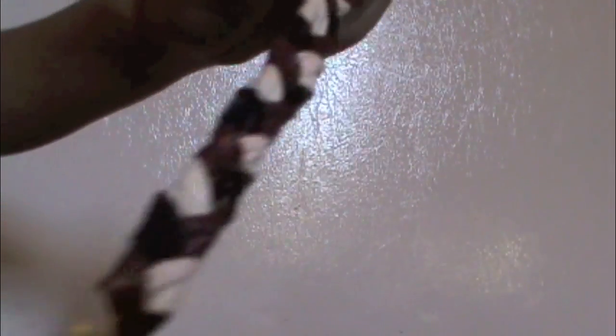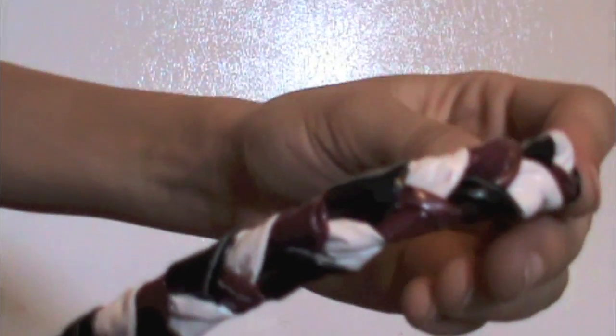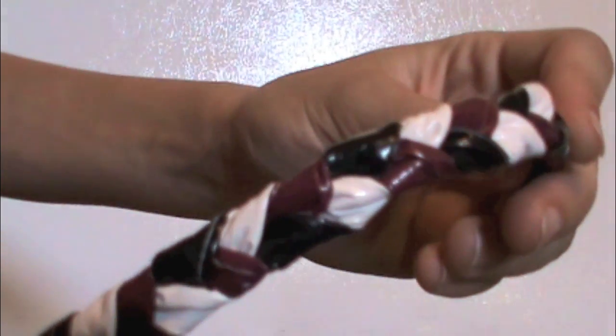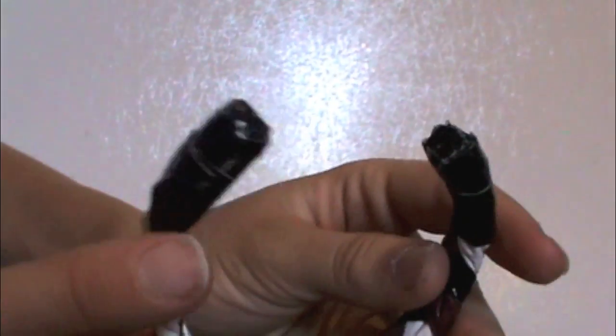The next bracelet is maroon, white, and black. Let's see if it will auto-focus. There we go. Maroon, white, and black with black magnets.